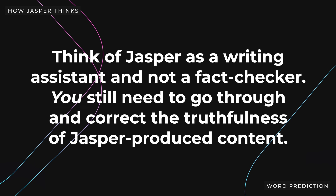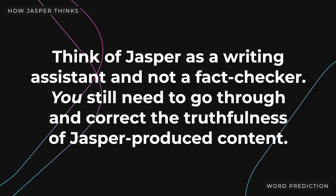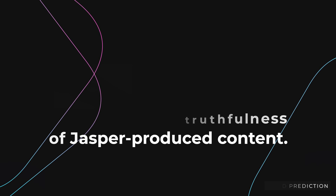While Jasper has read much of the internet, the way that he is trained to write causes him to put more emphasis on creativity than factuality. And because of that, you'll notice that Jasper regularly writes things that aren't true. Think of Jasper as a writing assistant and not a fact checker. You still need to go through and correct the truthfulness of Jasper-produced content. Jasper's ability to predict the content that you are looking for is second to none, and that's what makes his writing ability so useful in so many scenarios.